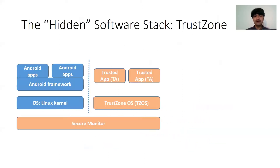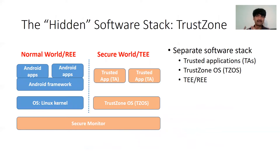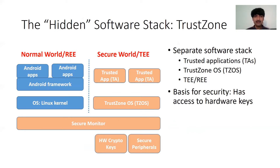TrustZone runs its own operating system and its own applications called TAs. TrustZone is otherwise called the Trusted Execution Environment or the secure world, whereas all other software is called the normal world or the rich execution environment. The secure monitor allows switching between the normal world and secure world and vice versa. A special thing about TrustZone is that it has access to hardware crypto keys — only TrustZone has access, not the normal world — and this is hardware enforced.